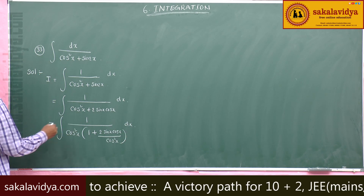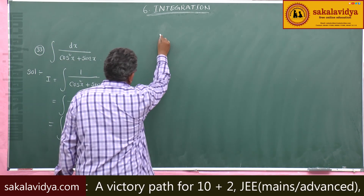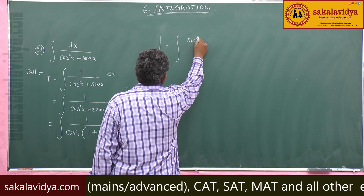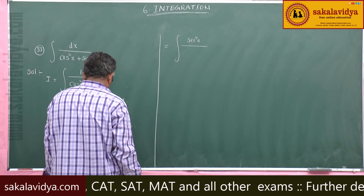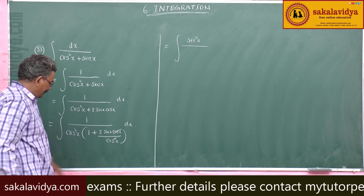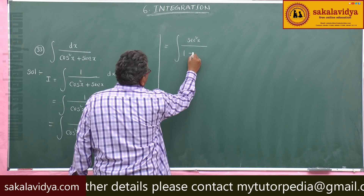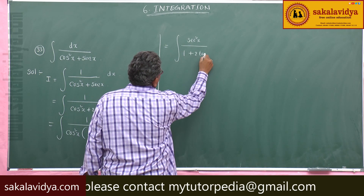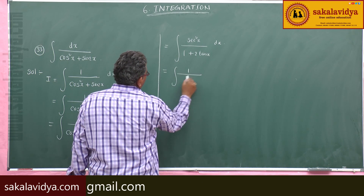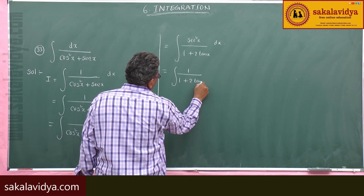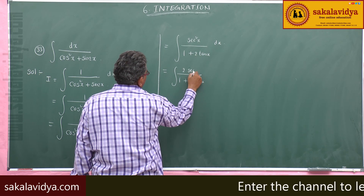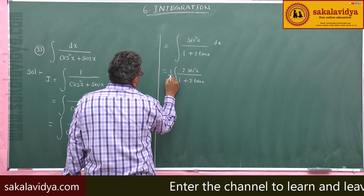So 1 by cos square x is taken out, giving 1 plus 2 sin x cos x by cos square x dx. Now, 1 by cos square x is secant square x. So this equals integral of secant square x by 1 plus 2 tan x dx, since sin x by cos x is tan x and one cos x cancels.